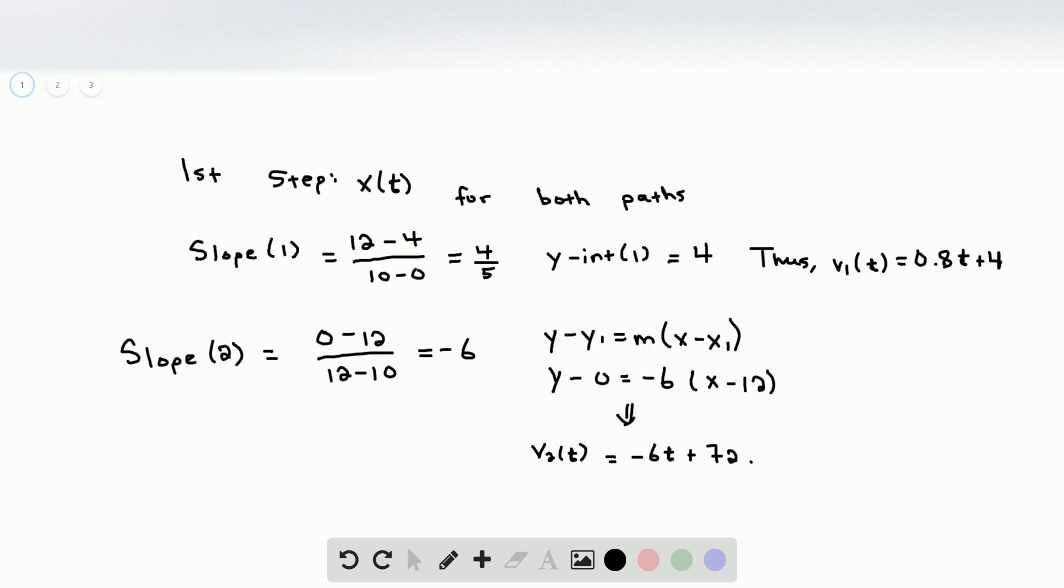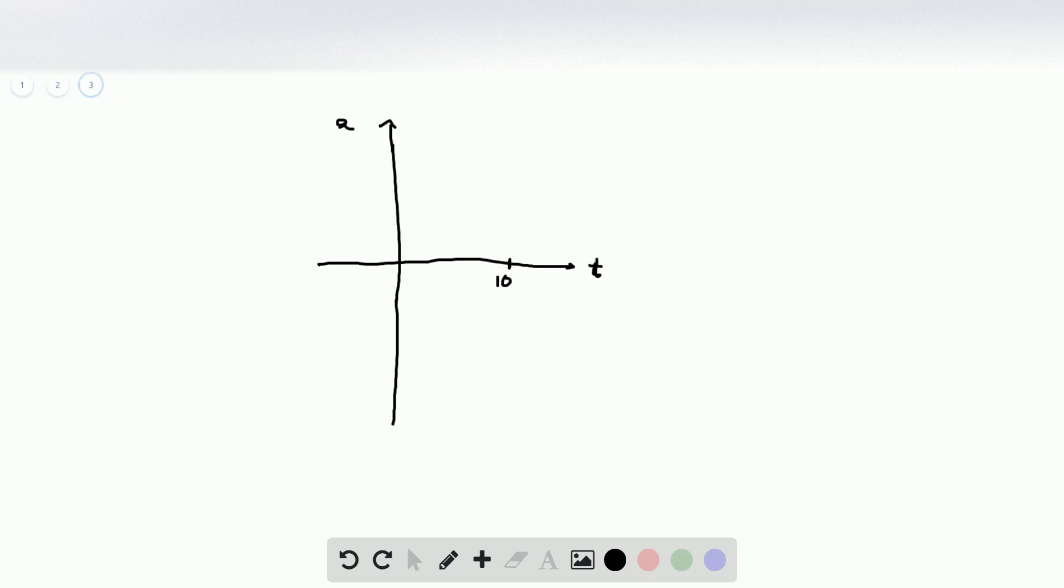And since the acceleration is the derivative of velocity and the slope of this velocity line is 4 fifths, the acceleration is actually just 4 fifths. Positive 4 fifths up until here. So this is 4 fifths.